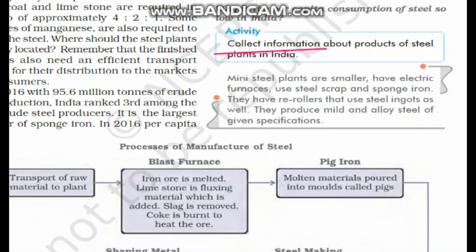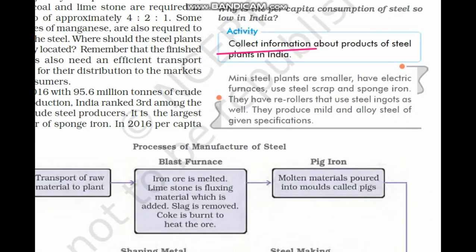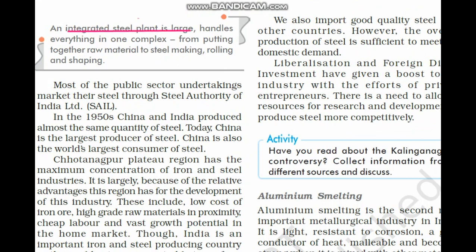There are two types of steel plants: mini steel plant and integrated steel plant. Mini steel plants are smaller facilities that use electric furnaces; they use steel scrap and sponge iron, have re-rollers that use steel billets, and produce mild and alloy steel to given specifications. Integrated steel plants are large facilities that handle everything in one complex — from raw material input to steel making, rolling, and shaping — using large equipment and infrastructure.